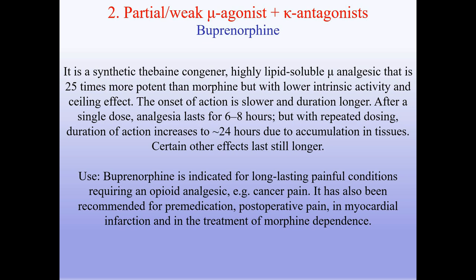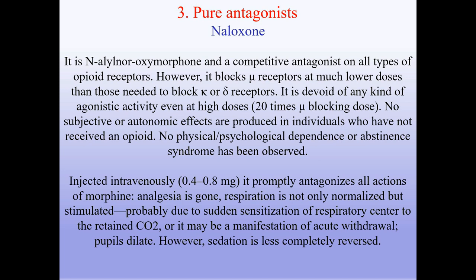Pure antagonist — Naloxone: it is an allyl noroxymorphone and a competitive antagonist on all types of opioid receptors. However, it blocks mu receptors at much lower doses than those needed to block kappa or delta receptors. It is devoid of any agonistic activity even at high doses. No subjective or autonomic effects are produced in individuals who have not received an opioid; no physical or psychological dependence or abstinence syndrome has been observed. Injected IV at 0.4–0.8 mg, it promptly antagonizes all actions of morphine: analgesia is gone, respiration is normalized and stimulated (probably due to sensitization of the respiratory center to retained CO₂, or manifestation of acute withdrawal), and pupils dilate. Sedation is less completely reversed.